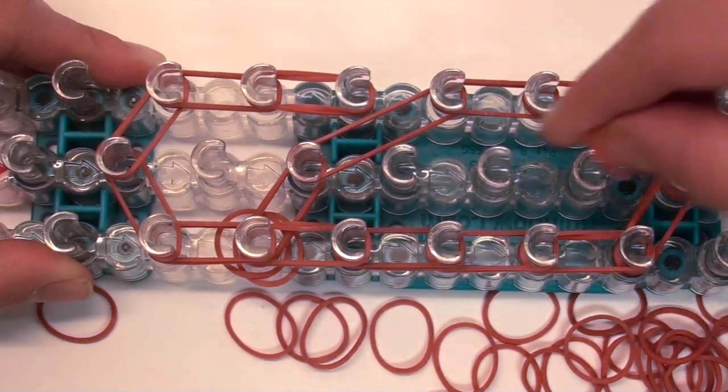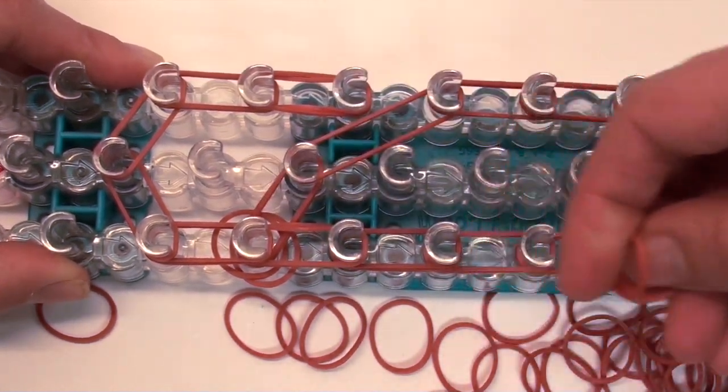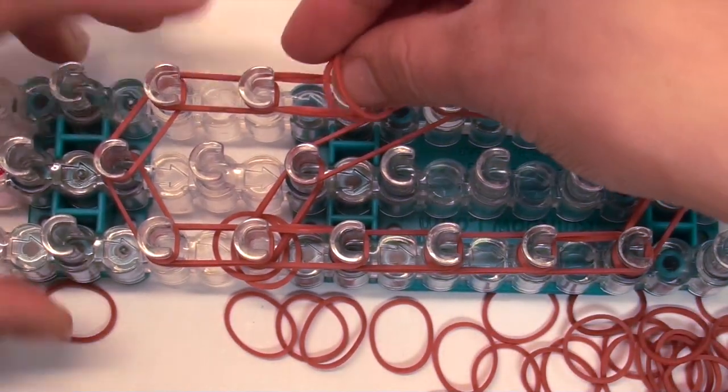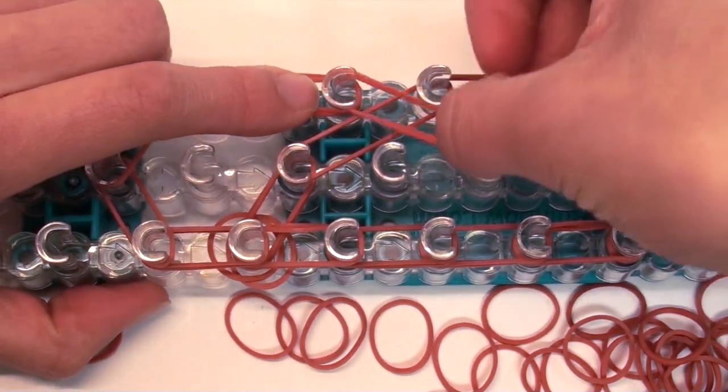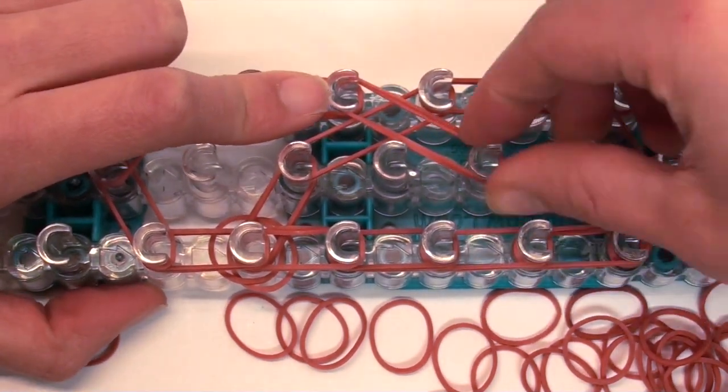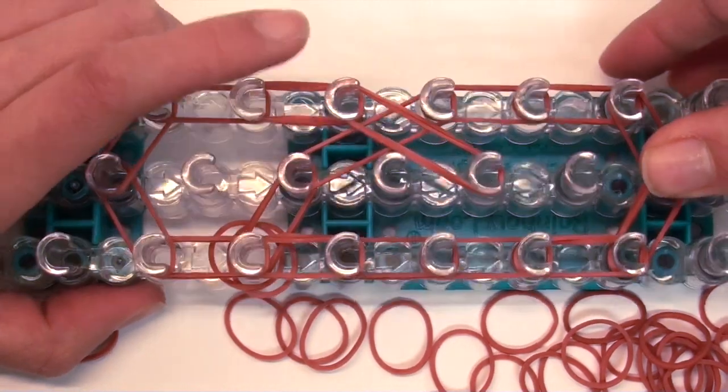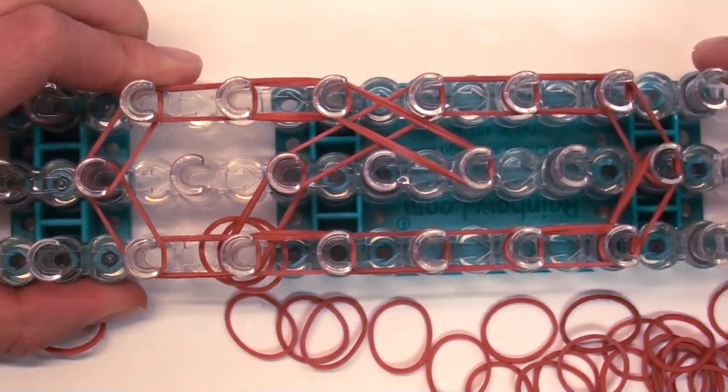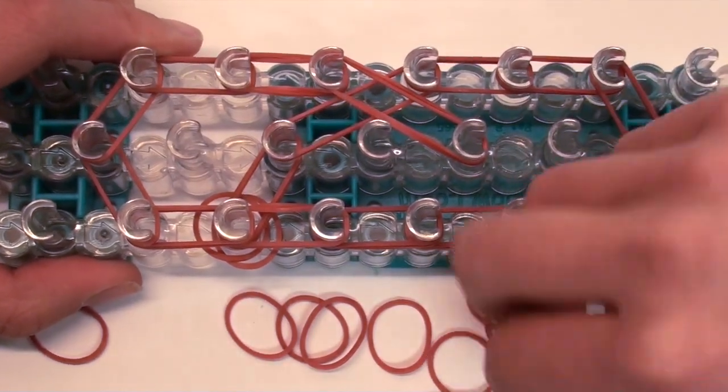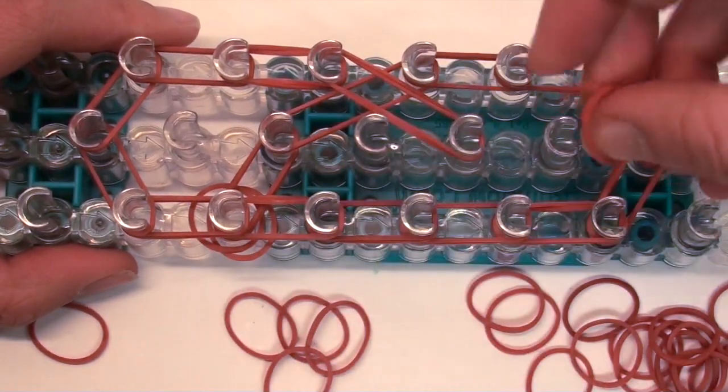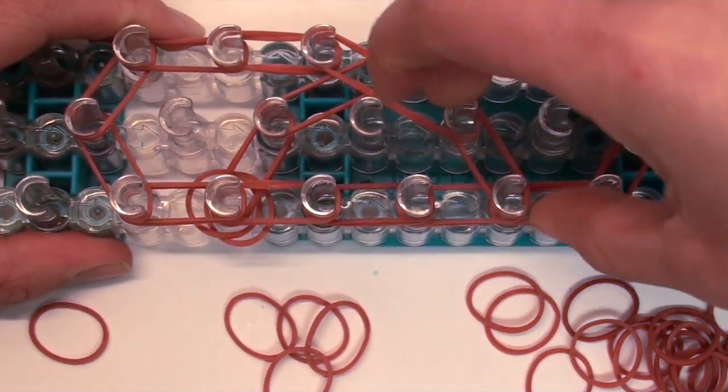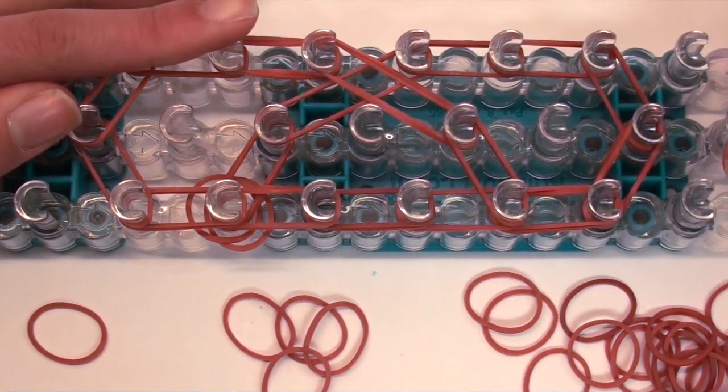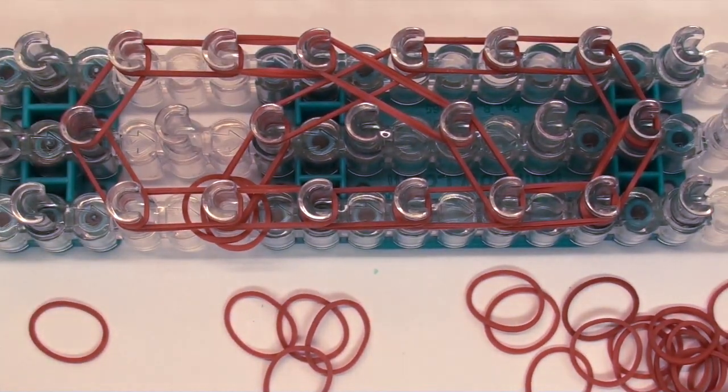And now we're going to do sort of this awkwardly long kind of band here. So you're gonna stretch from this top pin here all the way down across to this bottom pin here. So you get this kind of X figure here. So make sure you stretch across that way. And now we're going to basically finish off a little bit. Like that. And we are pretty much done with putting bands on our loom.